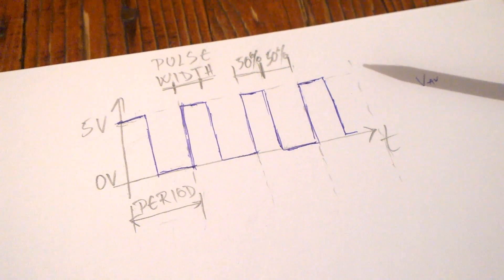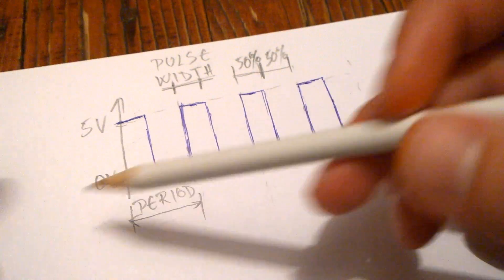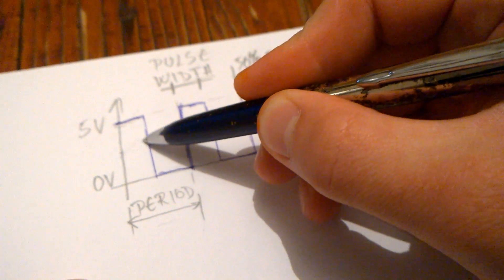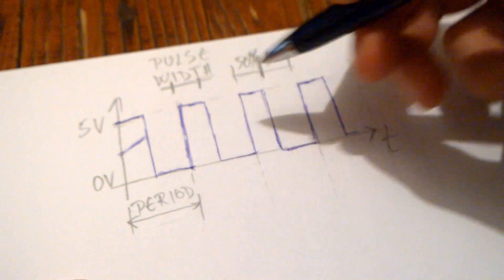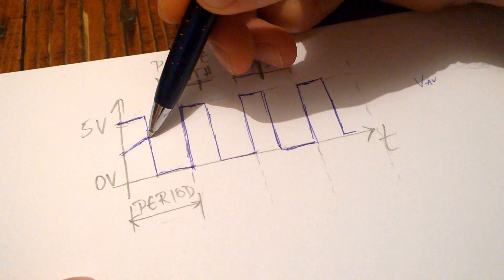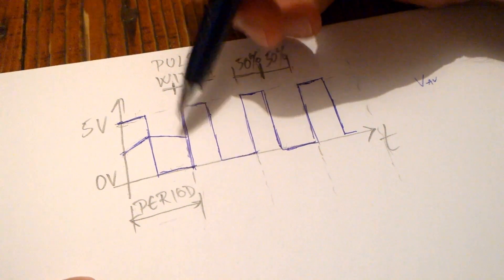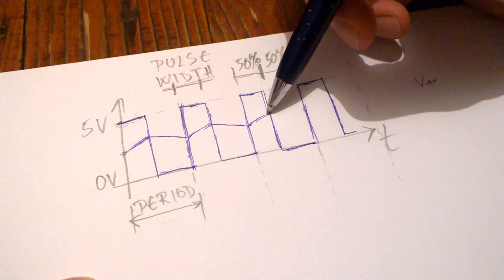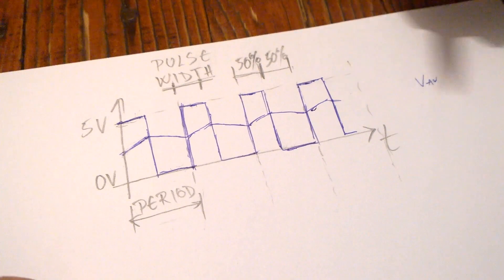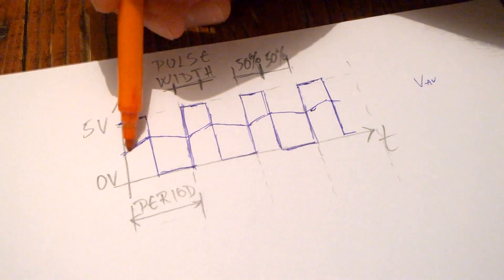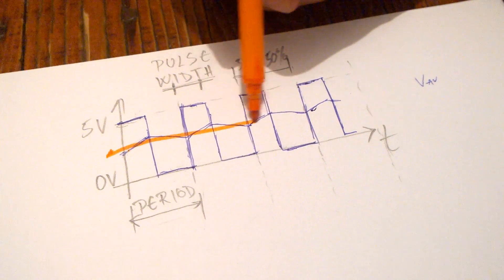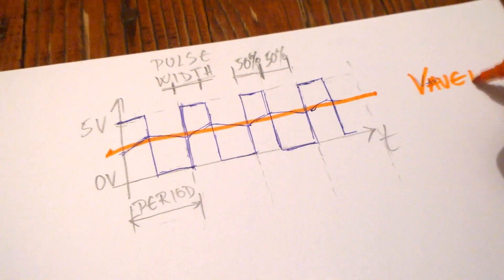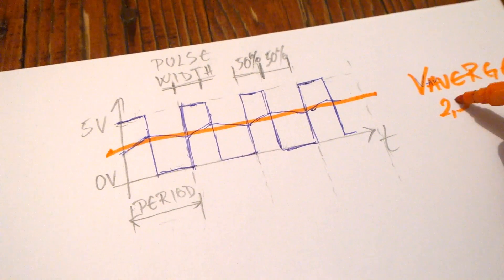With 50% duty cycle, the average voltage would rise when the signal is high and drop when the voltage is zero, repeatedly rising and dropping. So 50% duty cycle means we would have an average voltage of approximately 50% of 5 volts — that would mean an average voltage of 2.5 volts.